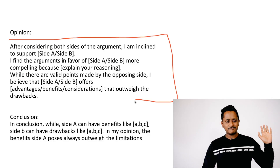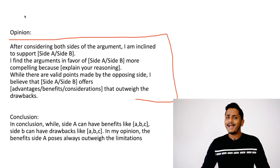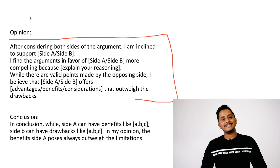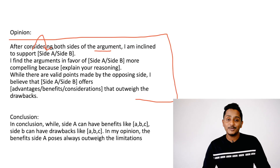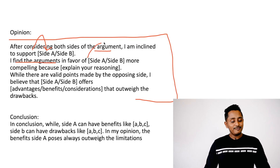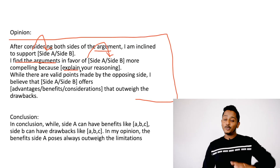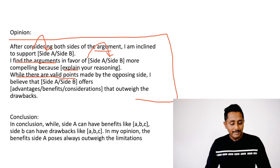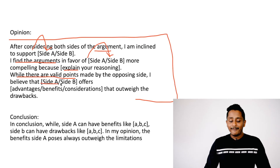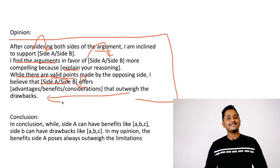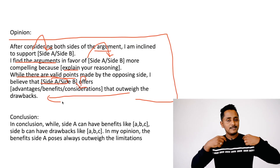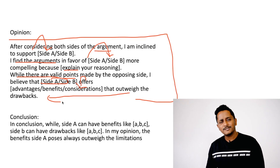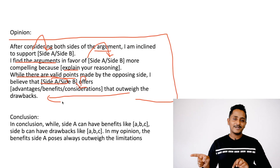Don't be confused — it's a very simple opinion template. When you write on your own you often make mistakes. For example, on the school uniform question: 'After considering both sides of the argument, I am inclined to support mandating uniforms. I find the arguments in favor of mandating uniforms more compelling because compulsory uniforms promote equality. While there are valid points made by the opposing side, I believe that mandatory uniforms offer considerations that outweigh the drawbacks.' Easy, isn't it?